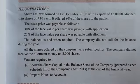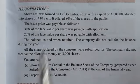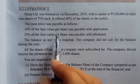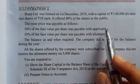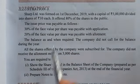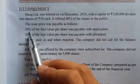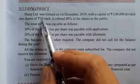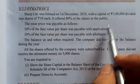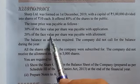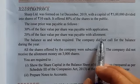The price was payable as follows. 30% of the face value per share was payable with the application. Since the face value is Rs. 10, 30% means Rs. 3 on application. Then 20% of the face value per share was paid with the allotment — that means Rs. 2 on allotment, after the shares are accepted.